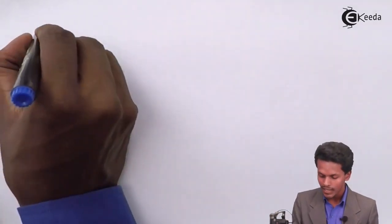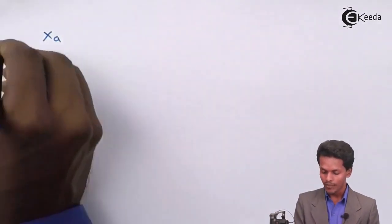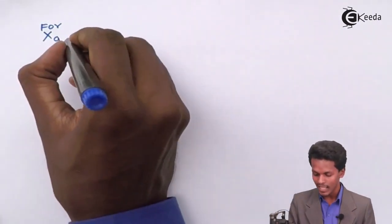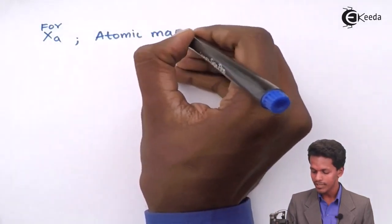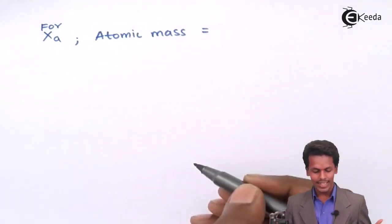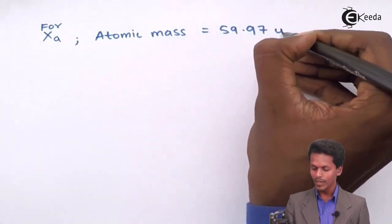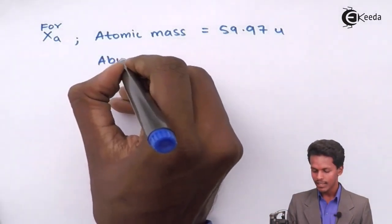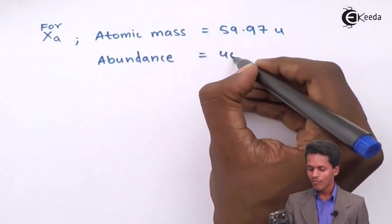I am considering the first isotope as XA. For XA, the atomic mass provided is 59.97 unified mass and the abundance is 40%.